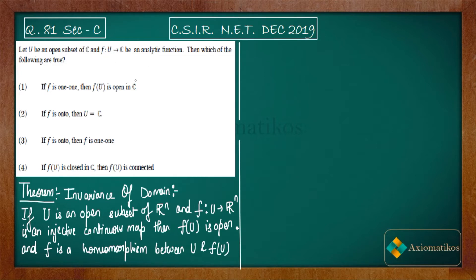If f: D → ℂ is analytic and non-constant, then it maps open sets to open sets — but the problem requires the domain to be open and connected. Since that is not given here, we cannot directly say that f(U) is open. We need injectivity, and that is why this part is handled by the Invariance of Domain theorem.